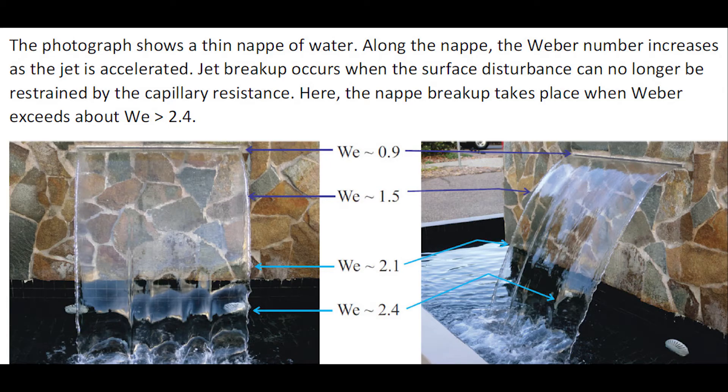The photograph shows a thin nappe of water. Along the nappe, the Weber number increases as the jet is accelerated. Jet breakup occurs when the surface disturbances can no longer be restrained by the capillary resistance.